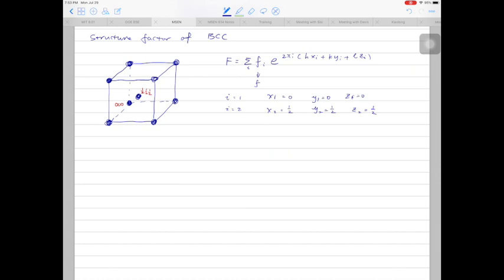Let's substitute the numbers in. So f is equal to f e to the power 2 pi i. This is zero plus zero plus zero for the first part when i is equal to 1.